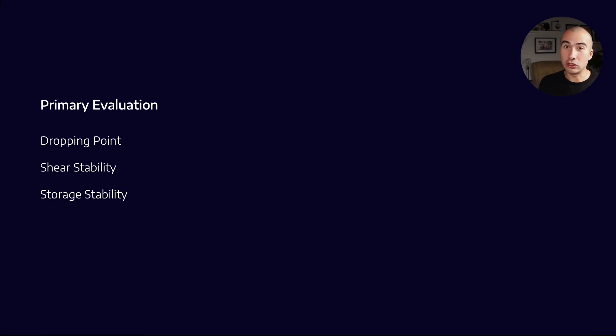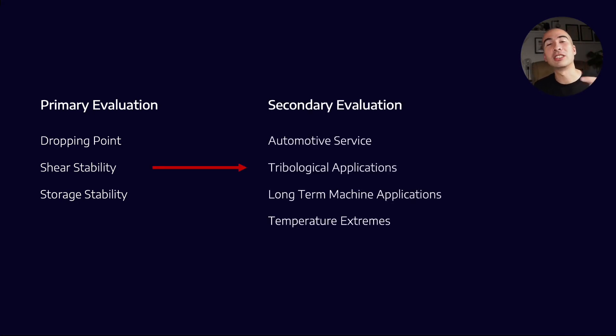We're actually used to use this just as a guide. So if it passes all these evaluation criteria, we're supposed to move on to a secondary evaluation, which takes into account what kind of application is this going to be in. Is it going to be in automotive application? Is it going to be high-temperature extremes?